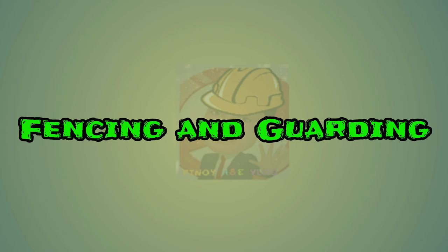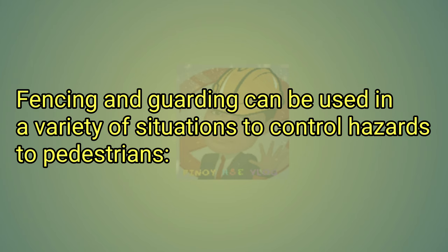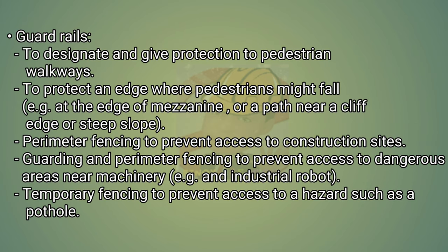Fencing and guarding can be used in a variety of situations to control hazards to pedestrians: guardrails to designate and give protection to pedestrian walkways, to protect an edge where pedestrians might fall, e.g. at the edge of a mezzanine, or a path near a cliff edge or steep slope. Perimeter fencing to prevent access to construction sites. Guarding and perimeter fencing to prevent access to dangerous areas near machinery, e.g. an industrial robot. Temporary fencing to prevent access to a hazard such as a pothole.